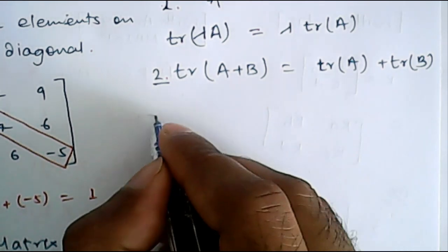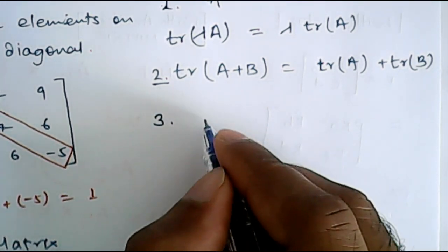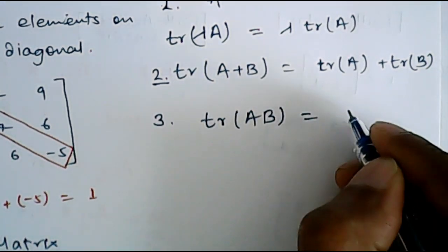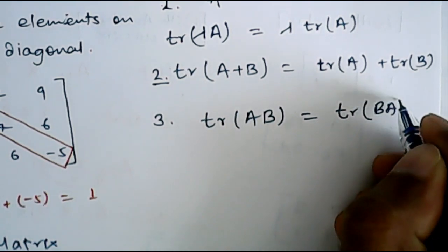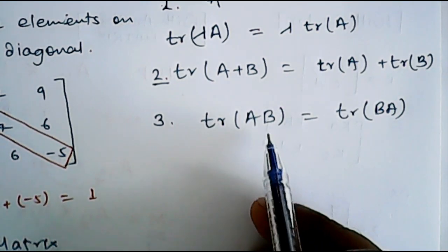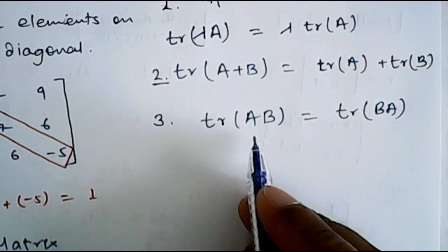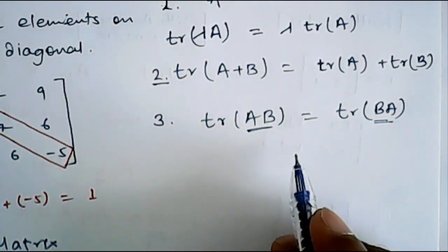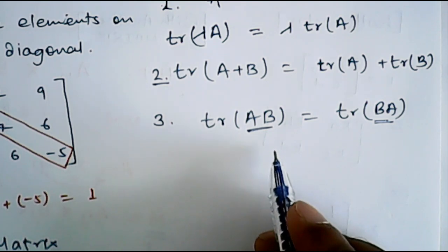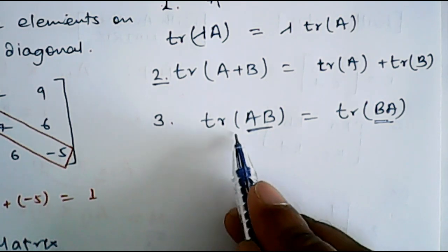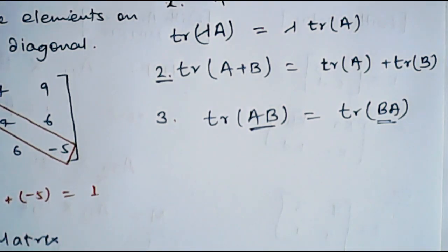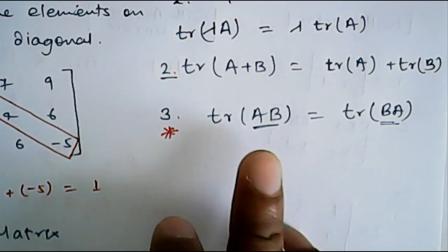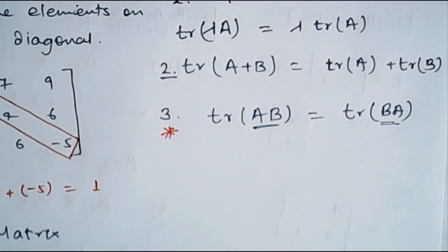Another one is again a simple property: trace of AB is equal to trace of BA. So, even if you change the order of multiplication, because you know in a matrix multiplication AB is not equal to BA, but the trace after multiplication, the trace will be same. So, this is one of the important property in this section. The trace of AB will be equal to trace of BA.